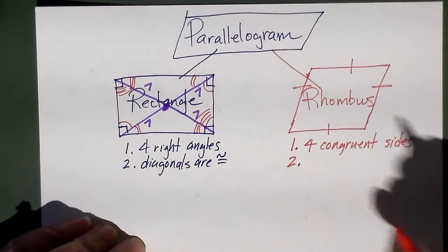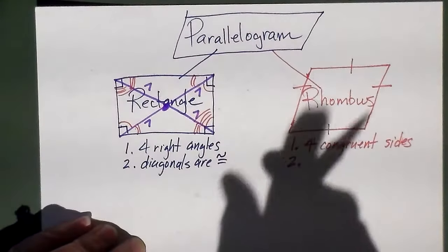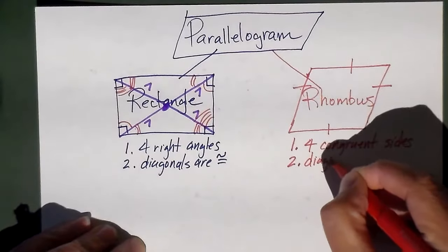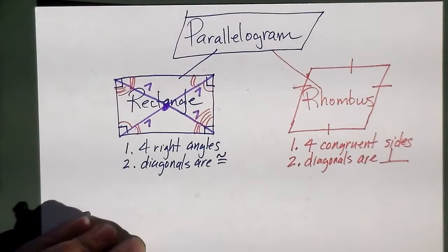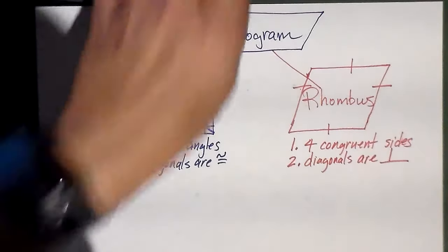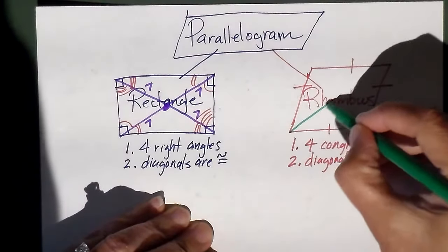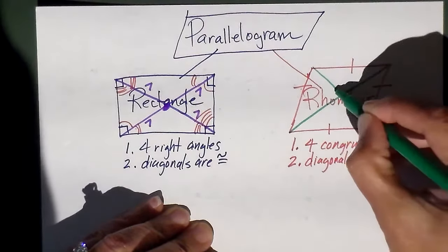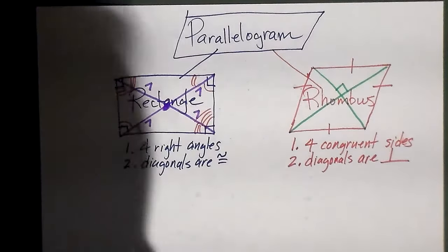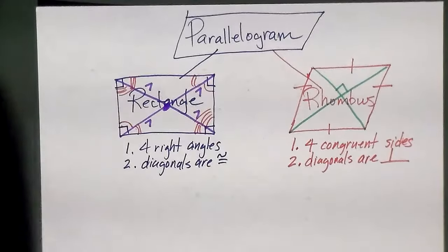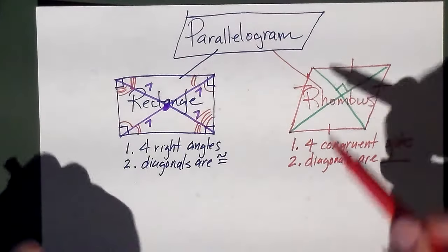The rhombus also has two other special characteristics that not all other parallelograms have. Number one: the diagonals are perpendicular. So if I draw the diagonals in a rhombus, they are going to make a right angle — four right angles created by the diagonals.